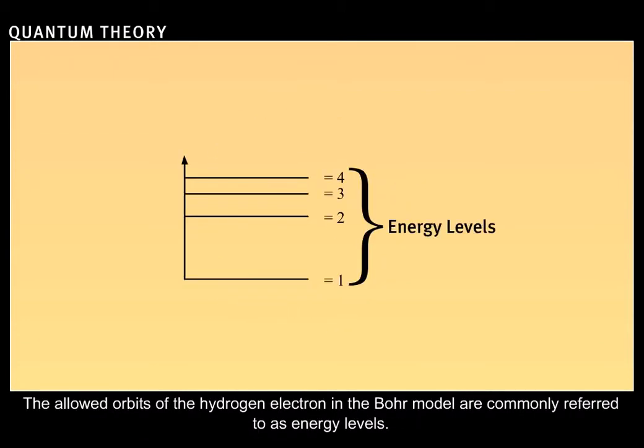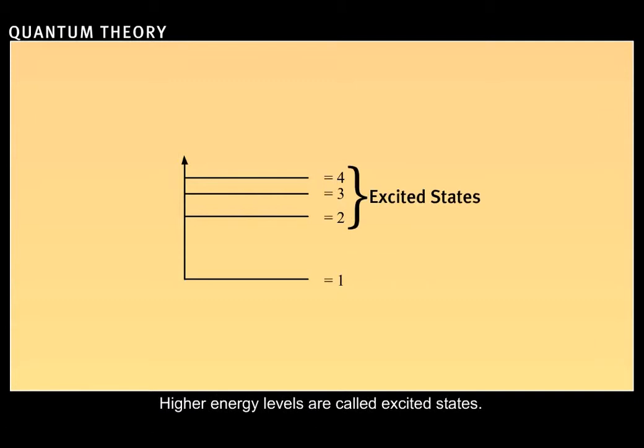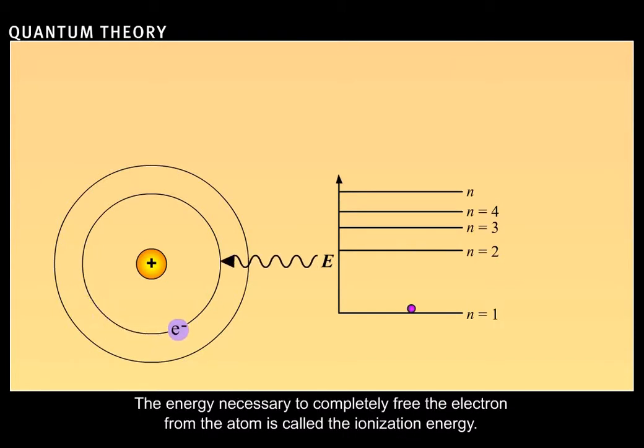The allowed orbits of the hydrogen electron in the Bohr model are commonly referred to as energy levels. The lowest energy level is called the ground state. Higher energy levels are called excited states. An electron must be given just the right amount of energy for it to ascend to a higher energy level. The energy necessary to completely free the electron from the atom is called its ionization energy.